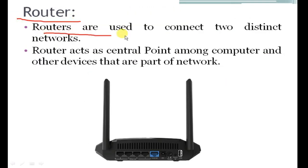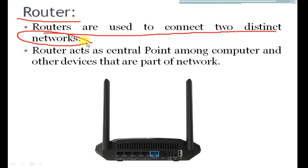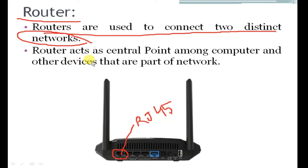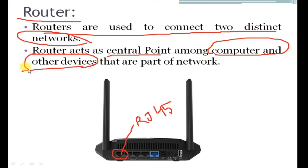A router is used to connect two distinct networks. Like a hub and switch, it is also a connector. The connector is named RJ-45. A router acts as a central point among computers and other devices, allowing them to connect to each other.